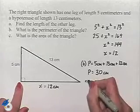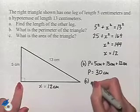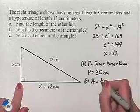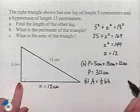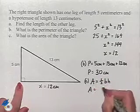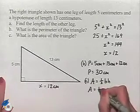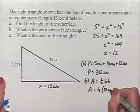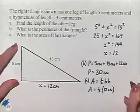And finally, we need to find the area of the triangle. Our formula for area is 1 half base times height. In this problem, our base is going to be 12 centimeters in length. Our height is going to be 5 centimeters.